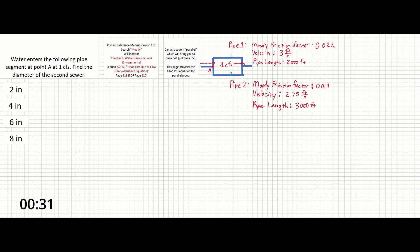We can also see that we've been given a number of other pieces of information about each sewer, namely the moody friction factor, the velocity, and the pipe length.